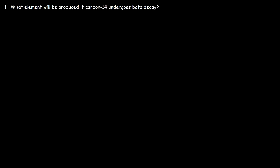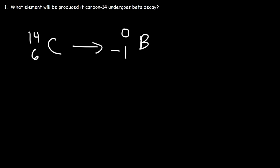What element will be produced if carbon-14 undergoes beta decay? First, we need to write a nuclear reaction. Carbon-14 has a mass number of 14, and using the periodic table, the atomic number of carbon is 6. It undergoes beta decay, and a beta particle is the equivalent of an electron. You can write it with a beta symbol or put an electron there.